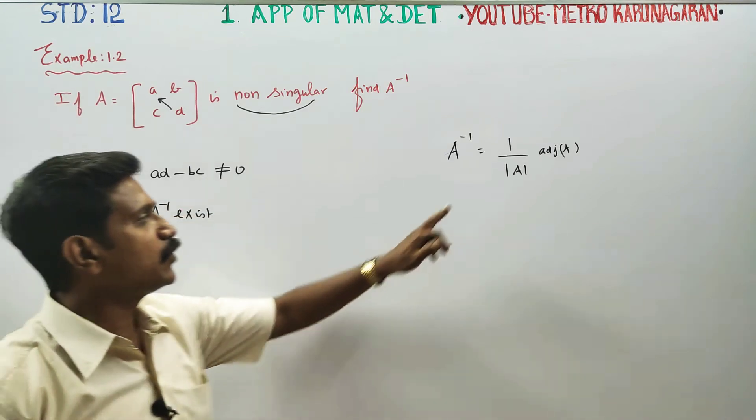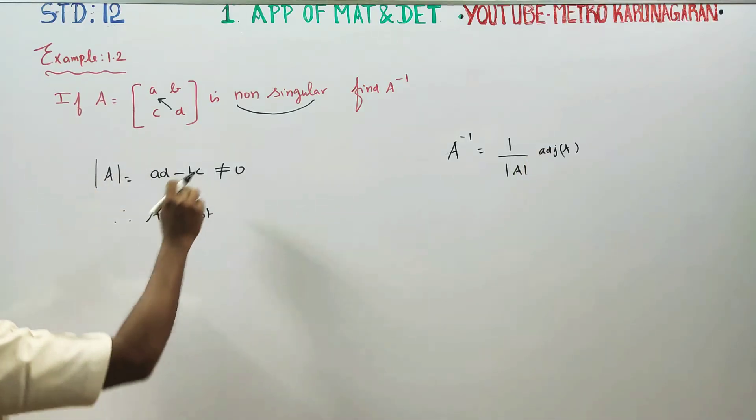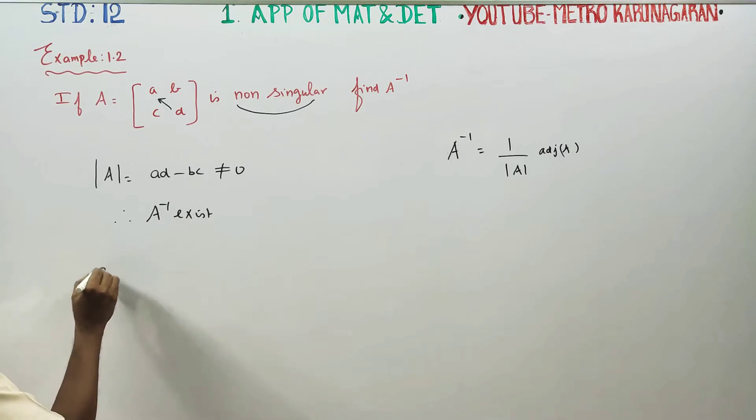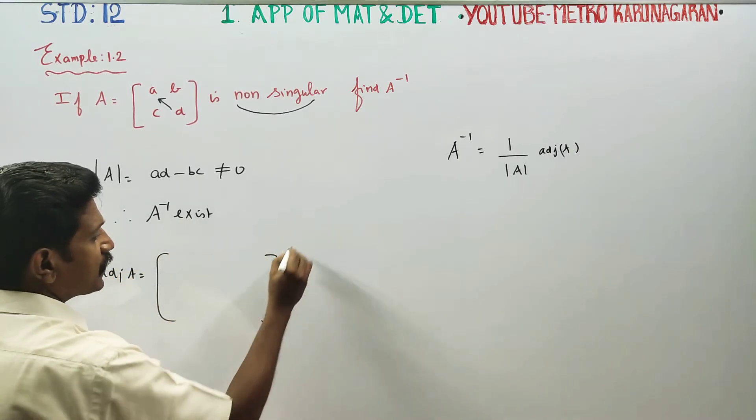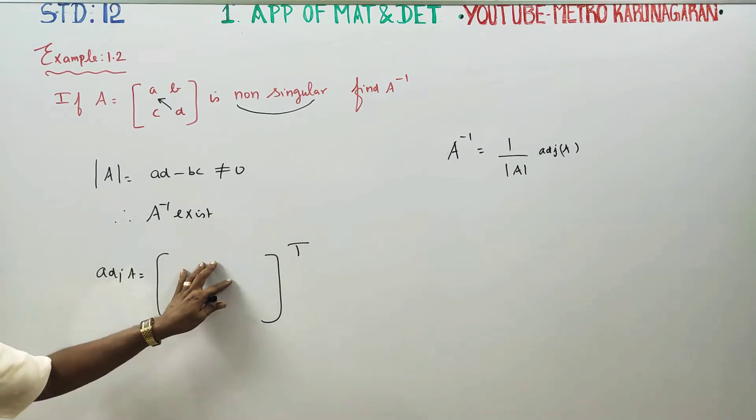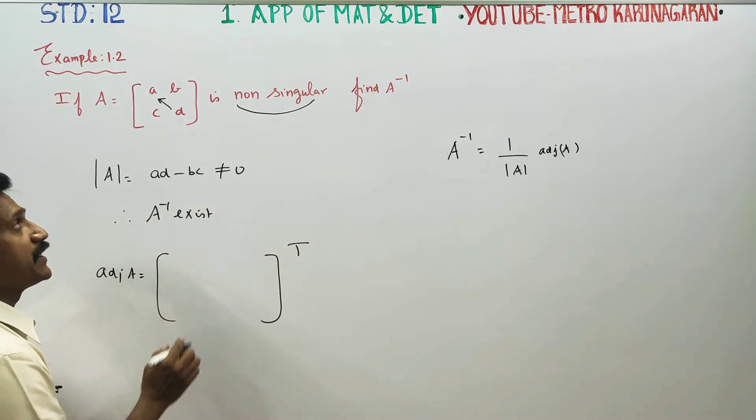If I get 0, it's 1 by 0, which can't be done. If not equal to 0, A inverse can be done. Adjoint A can be done. Adjoint A is the definition of cofactor matrix. Cofactor matrix is transposed. Cofactor matrix is signed minor.